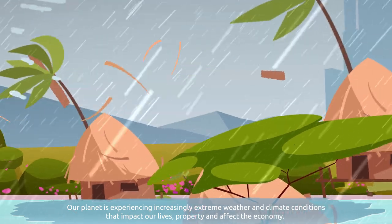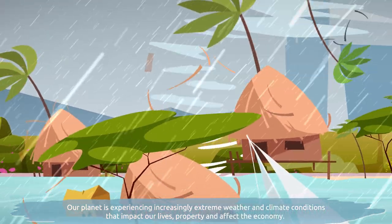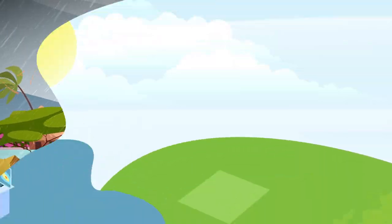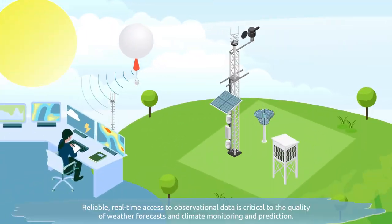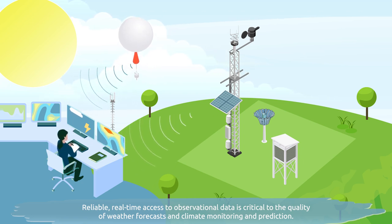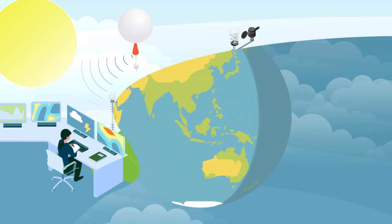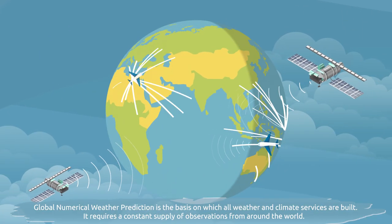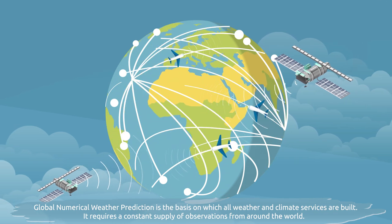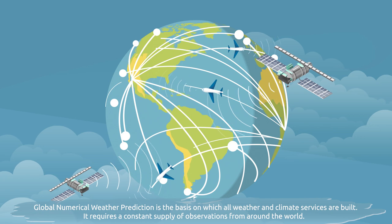Our planet is experiencing increasingly extreme weather and climate conditions that impact our lives, property and affect the economy. Reliable, real-time access to observational data is critical to the quality of weather forecasts and climate monitoring and prediction. Global numerical weather prediction is the basis on which all weather and climate services are built. It requires a constant supply of observations from around the world.